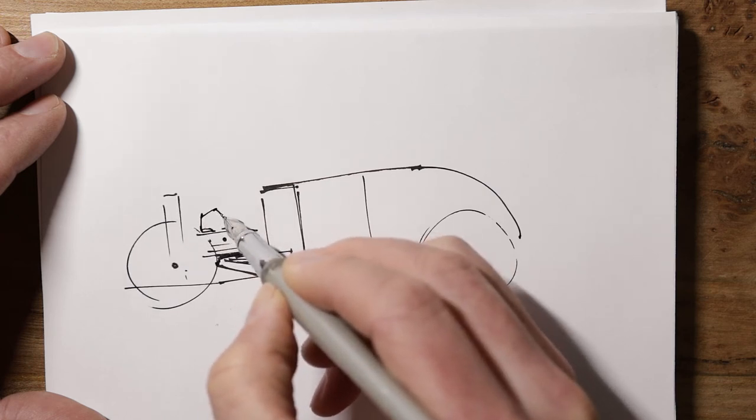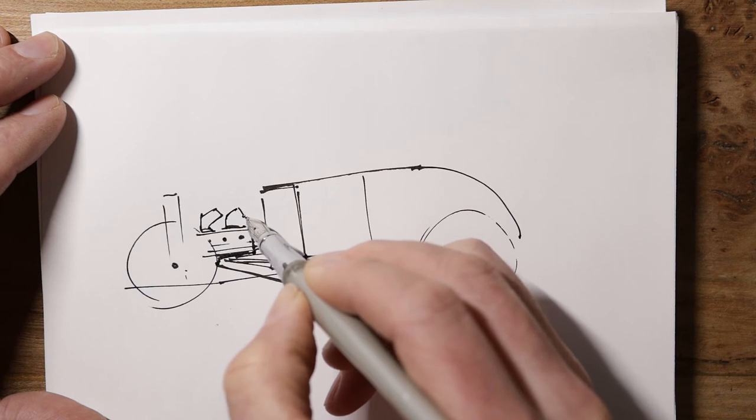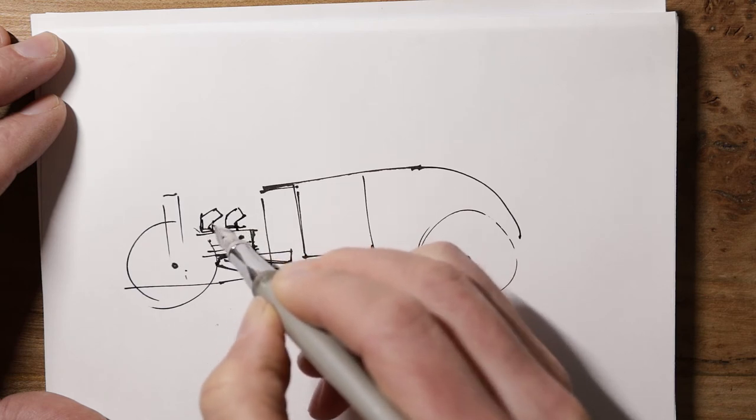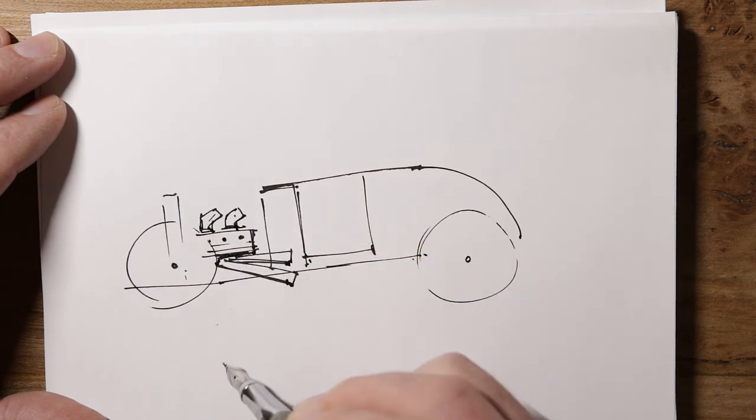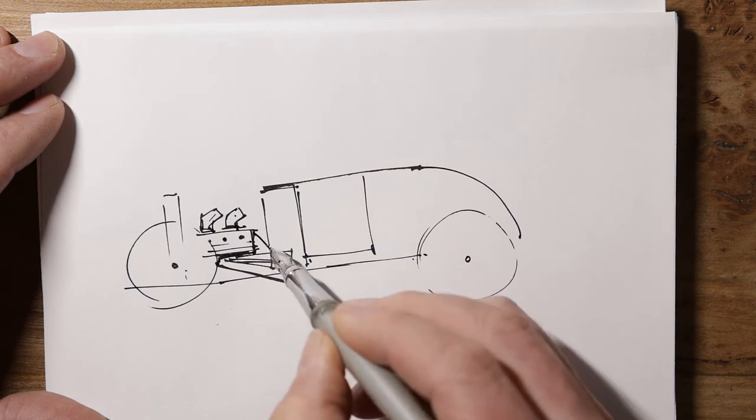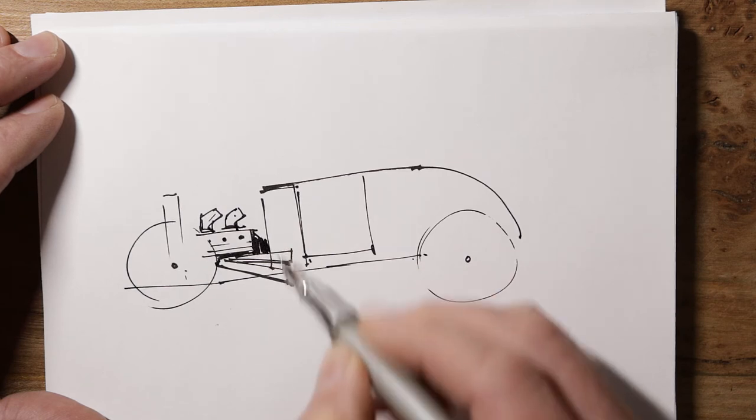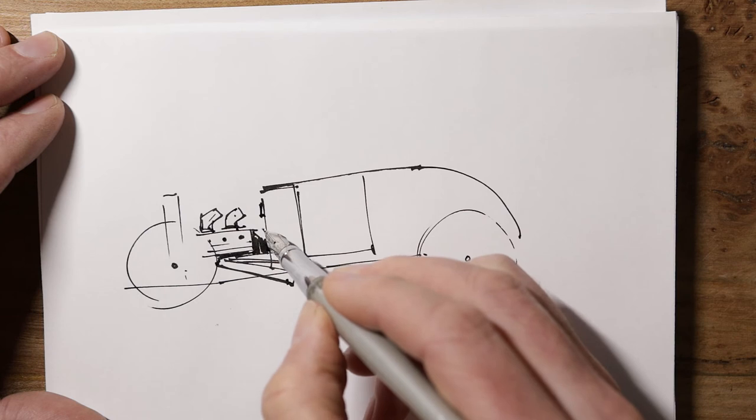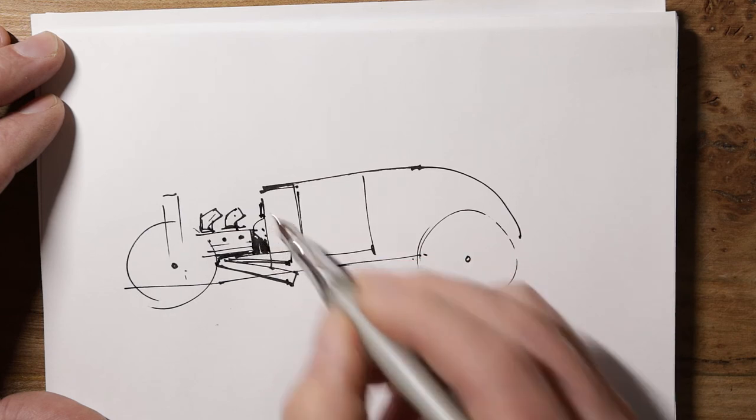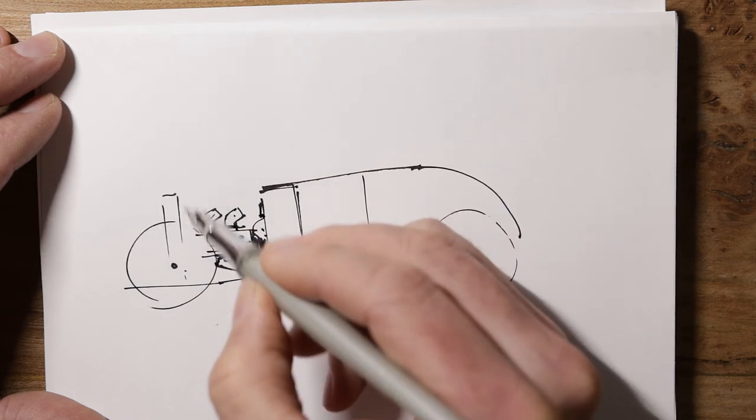And then on top of that you'd see the carburettors. I quite like those ones with the funnel, bent over funnel type intakes. Don't know what they're called. And then you'd see maybe the bell housing, maybe some electronics or bits on there and some wires.